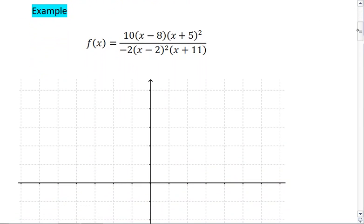We'll look at the example f(x) equals 10 times (x minus 8) times (x plus 5) squared, all over negative 2 times (x minus 2) squared times (x plus 11). You should be able to recognize that both the numerator and denominator are polynomials. They're simply polynomials in their factored form.